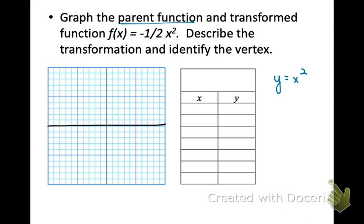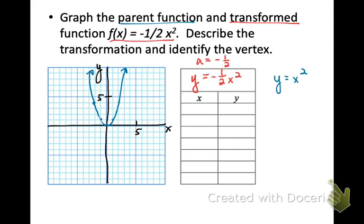We're going to start with the parent function. I'm not even going to show the table of values this time, y equals x squared. We know that our vertex is at 0, 0, and then we have points at negative 2, 4, negative 1, 1, and so on. Now our transformed function is a little different. We have negative 1 half. That's our a value, and that's the multiplier. Two things are going to be happening with this function. The negative is going to reflect it, and the 1 half is going to compress it.